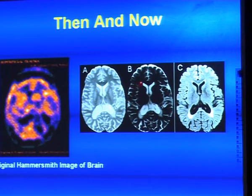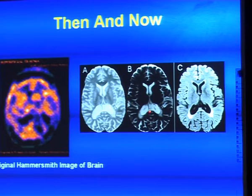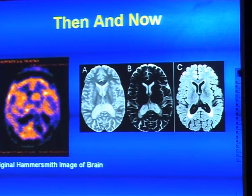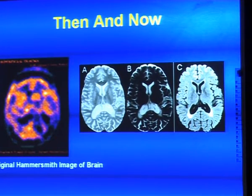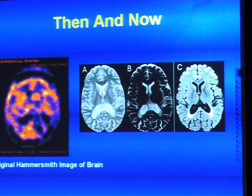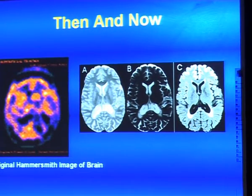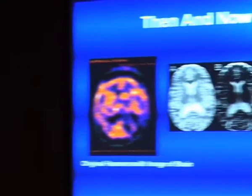Look at the details — you are seeing the cerebrospinal fluid, the gray matter, and the white matter which is dark. You can also see pathology in the brain. In other words, in the last 30 years we have come a really long way in terms of technology.